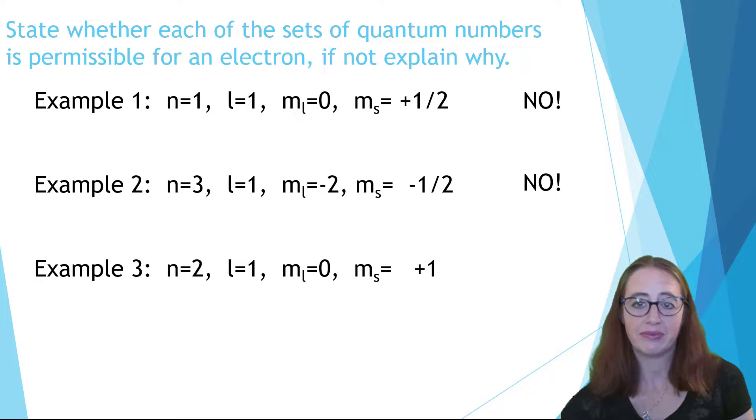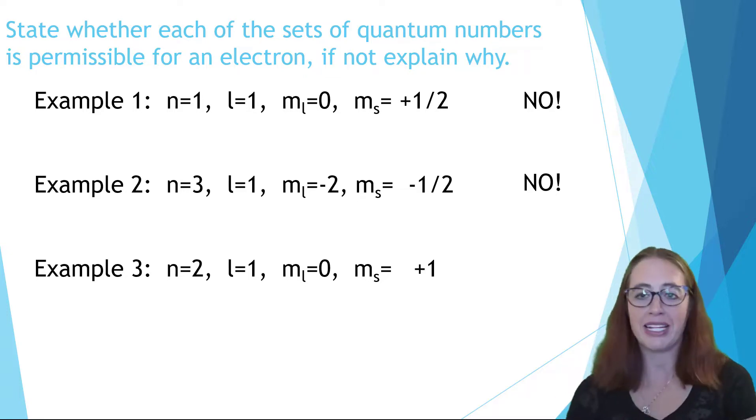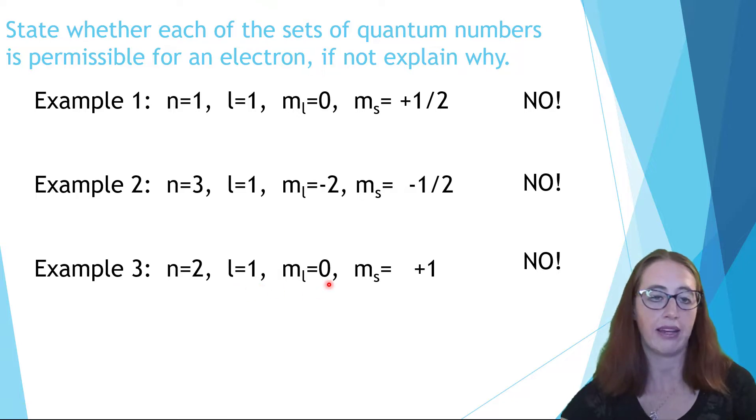Next one. Hopefully this one jumped out right away. m sub s is never allowed to equal one. It's only plus one half or negative one half if we're in our universe. But in our rule set, in our universe, m sub s plus one half, minus one half, that's it. We don't really even have to look at the other ones. It's just an automatic no. But let's go ahead and look and see if the other ones are okay. For n equals two, l is allowed to equal one. That's okay. m sub l equals negative one. That's fine. Because for l equals one, it's negative one, zero, and one. Just this one is the problem.